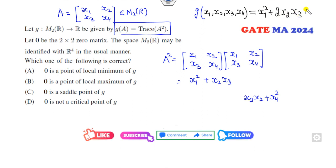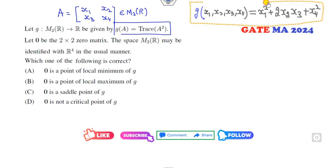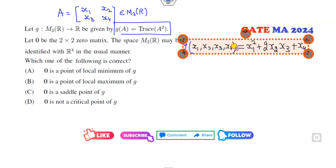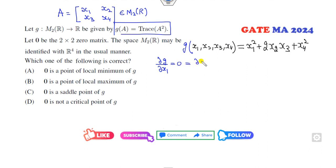Now the question said you have to check whether they are maxima, minima, saddle, or not critical point. So how can you find the critical point? I can take the first partial derivative to be 0. Partial derivative of g with respect to x1 is 0, partial derivative with respect to x2 is 0, partial derivative with respect to x3 is 0.